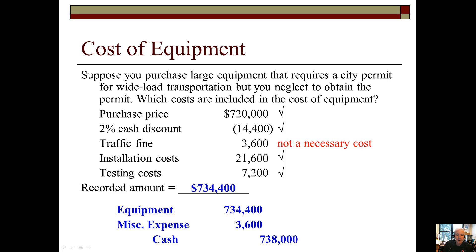Adding the necessary costs together gives us $734,400. We record a debit to equipment for $734,400 on the balance sheet. The traffic fine is expensed — it's a routine period expense, not capitalized. Cash is credited for the combined amount. Similarly for buildings, you'd include architectural fees, necessary back taxes, and similar costs. Note that negative costs also apply — for example, if you bought land with an old barn and sold the timber, those proceeds would reduce your cost basis of the land.